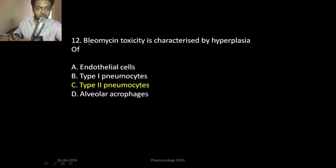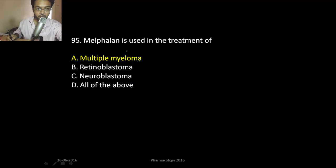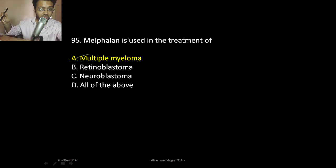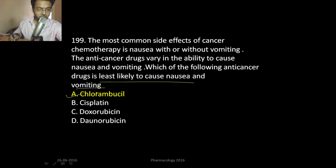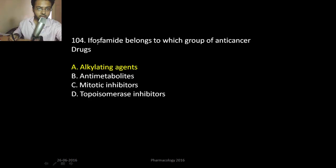Bleomycin causes pulmonary fibrosis by hyperplasia of type 2 pneumocytes, which produce surfactant. Melphalan is used in multiple myeloma. Earlier, thalidomide — a known teratogenic drug — was also used for multiple myeloma. The MCQ asked: which drug causes the least nausea and vomiting? Answer: chlorambucil. Cyclophosphamide is also an alkylating agent.